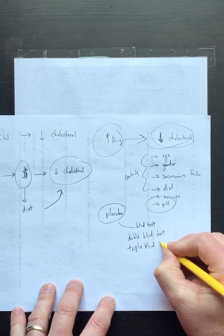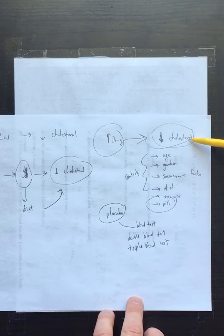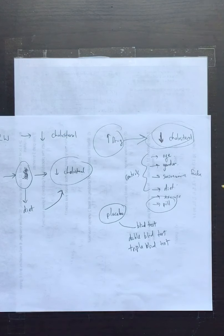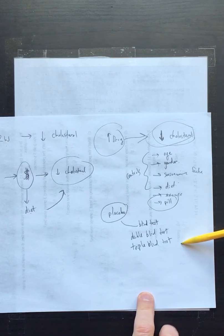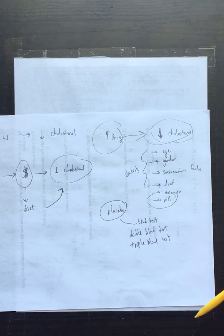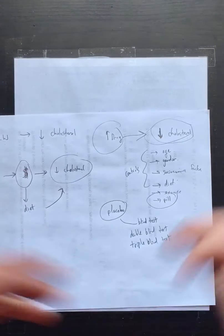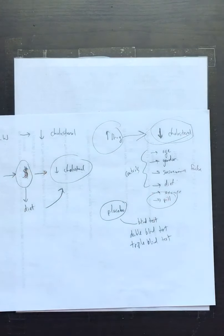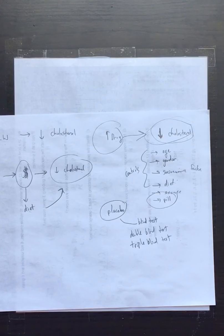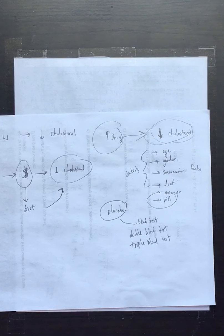So in a double blind test, neither the participants nor the measurers know who is taking the drug. There's even a triple blind test — and it's even more interesting — where the people analyzing the data afterward still don't know which group is which. They just code them: group A, B, C, D — and nobody at any stage knows what each group received.